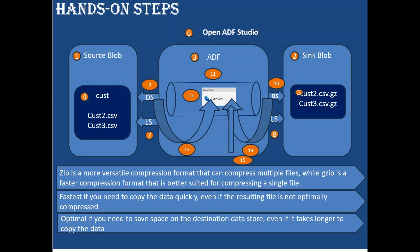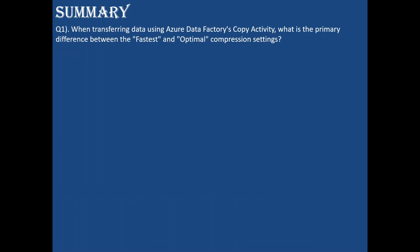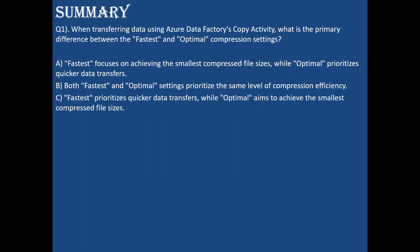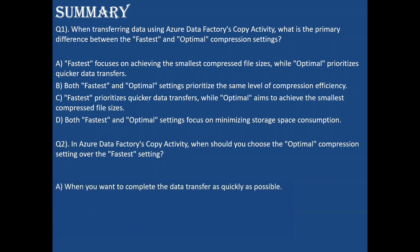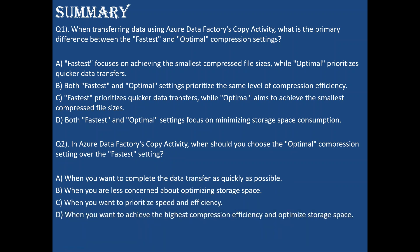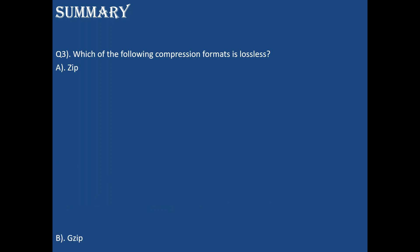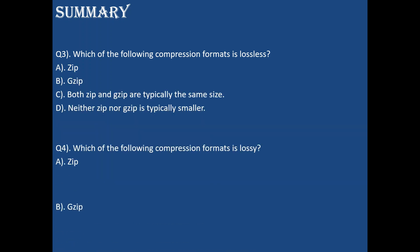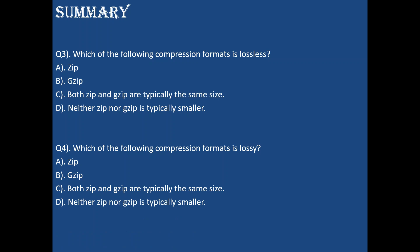That's all. Let's quickly see the summary questions and close for the day. Q1: What is the primary difference between fastest and optimal compression in ADF copy activity? Fastest prioritizes quick data transfer; optimal achieves the smallest compressed file size - answer C is correct. Q2: When should you choose optimal? When you want the highest compression efficiency and optimized storage space - option D is correct. Q3: Which format is lossless? gzip. Q4: Which format is lossy? zip.